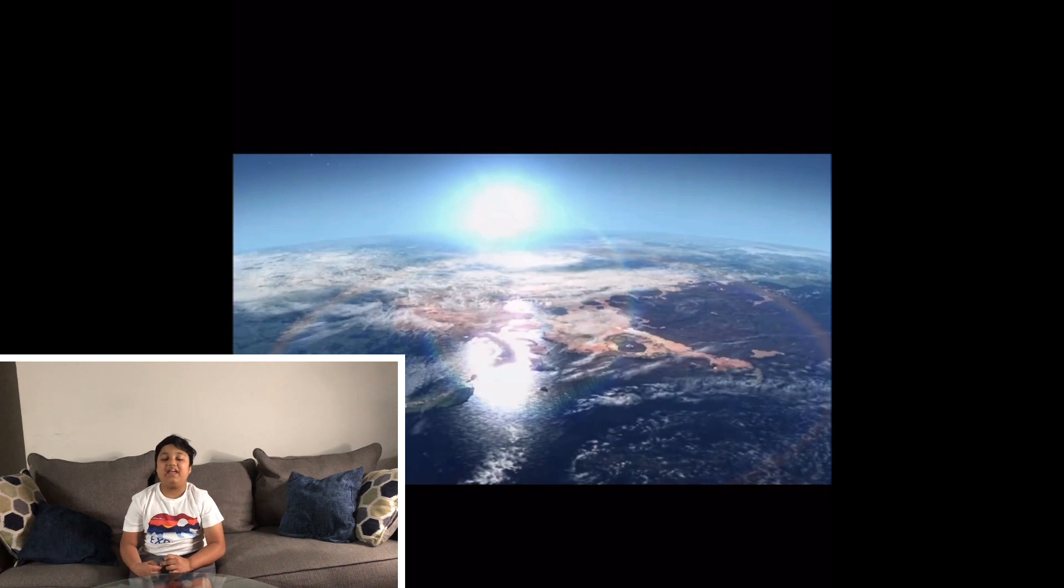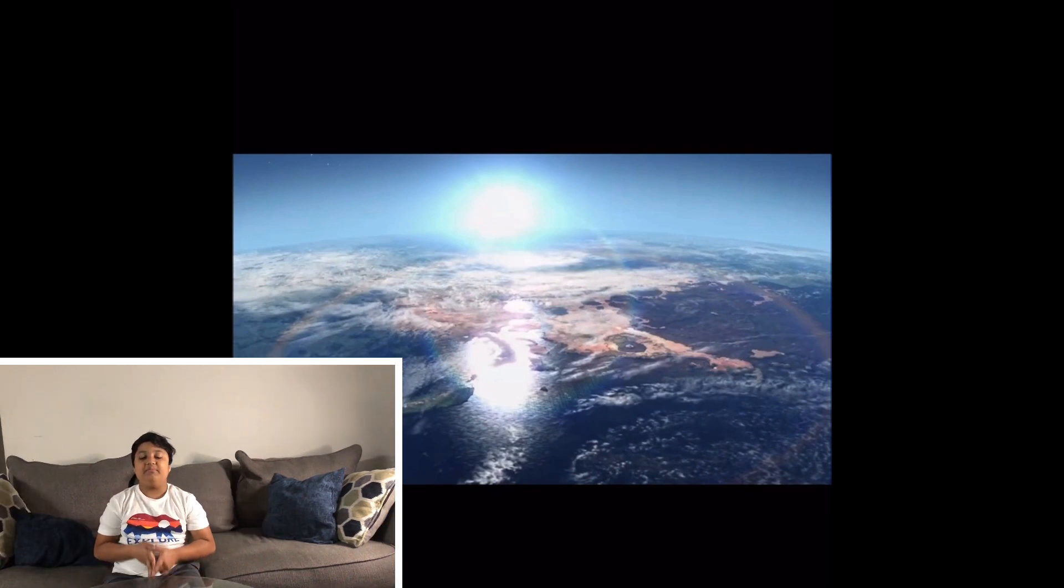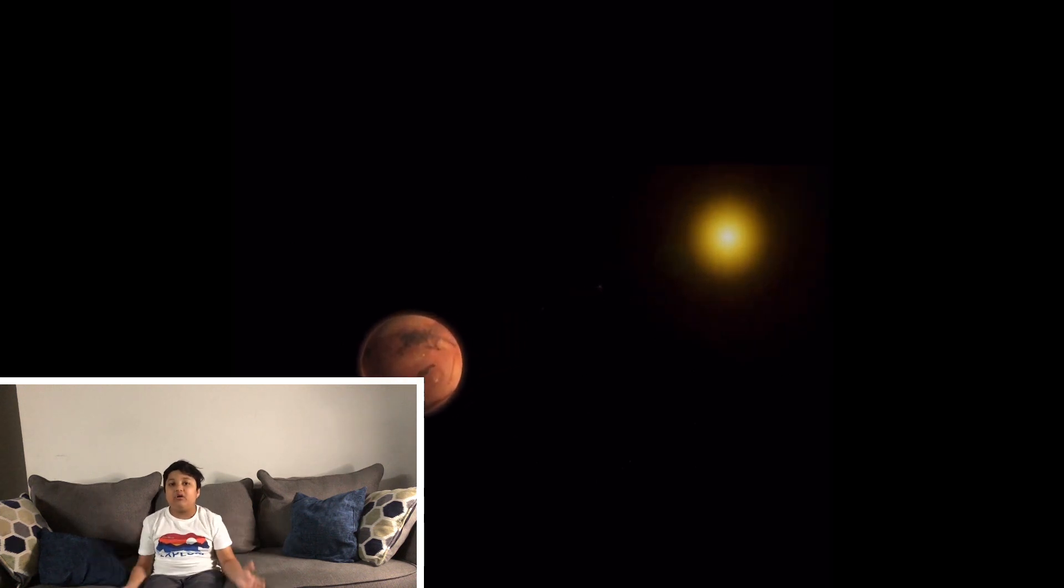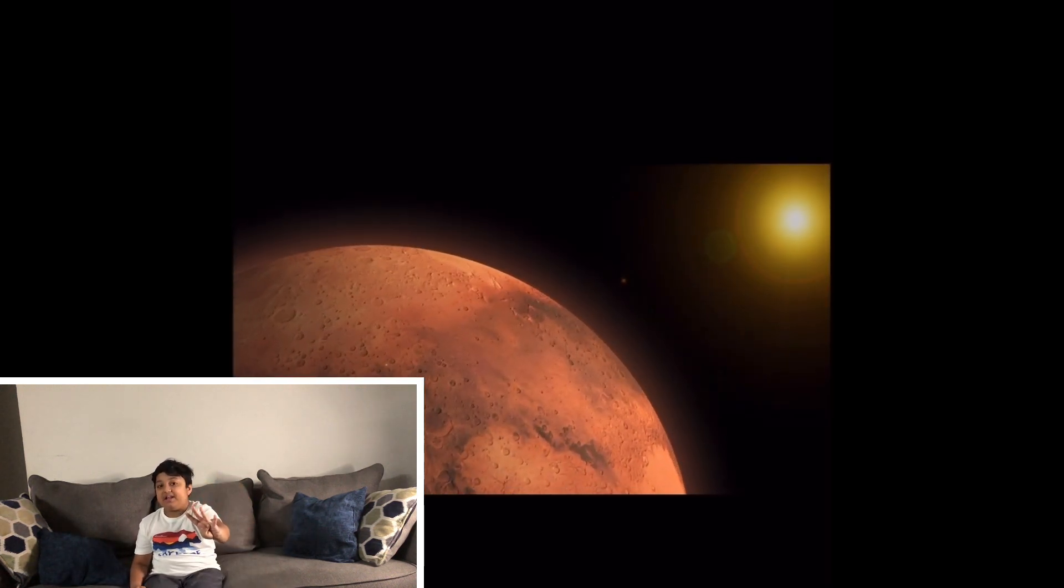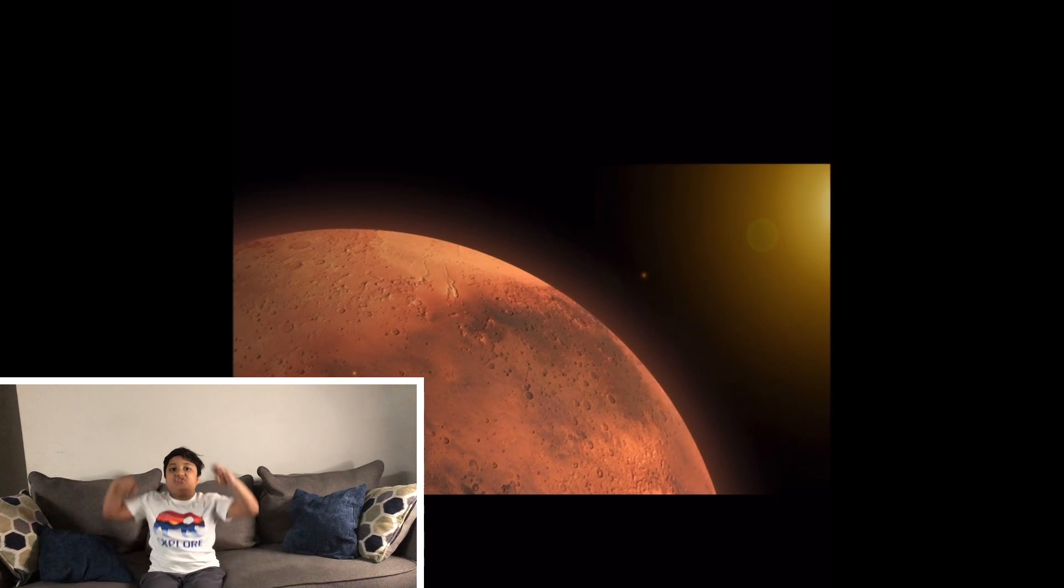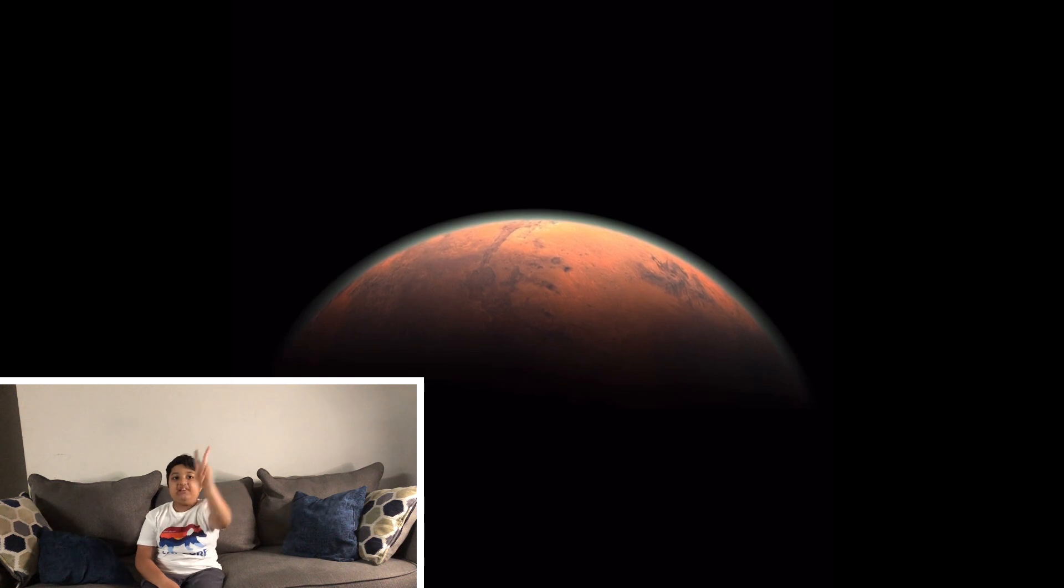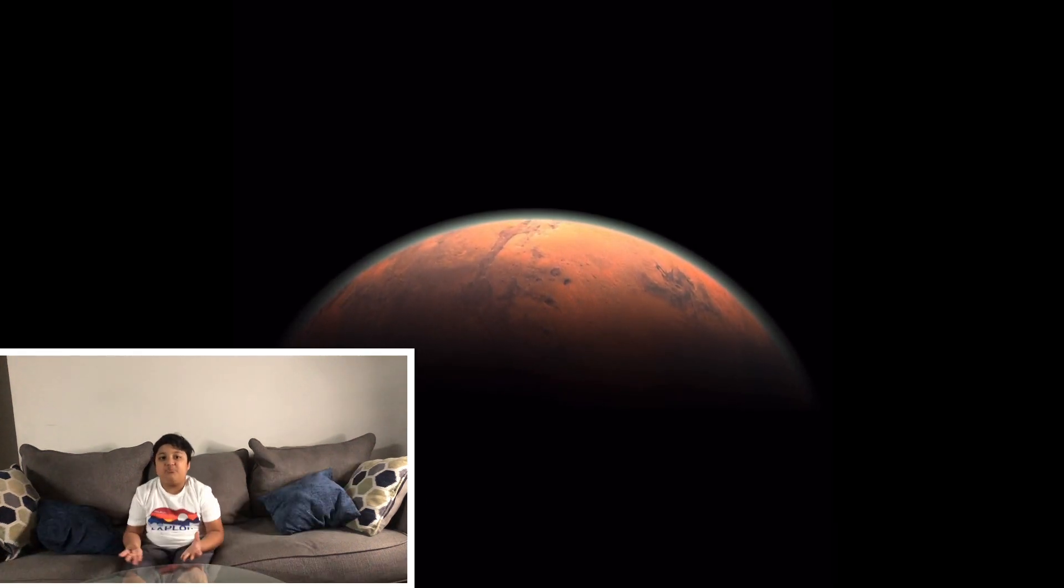Let's visit Mars. It's the fourth planet from our Sun and it's red. It has two moons, Phobos and Deimos. Mars is smaller than Earth and Venus but bigger than Mercury, because Mercury is the smallest planet in our solar system.